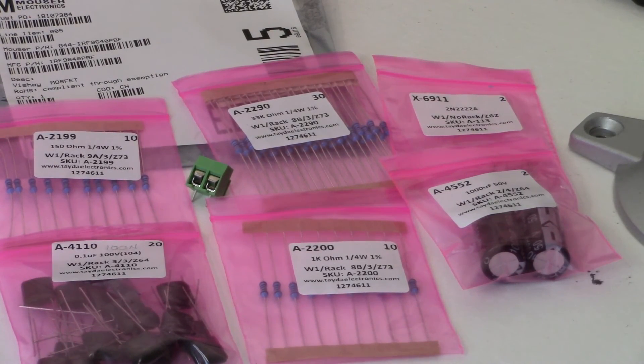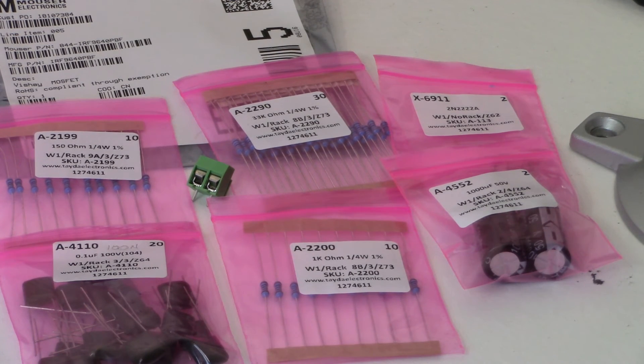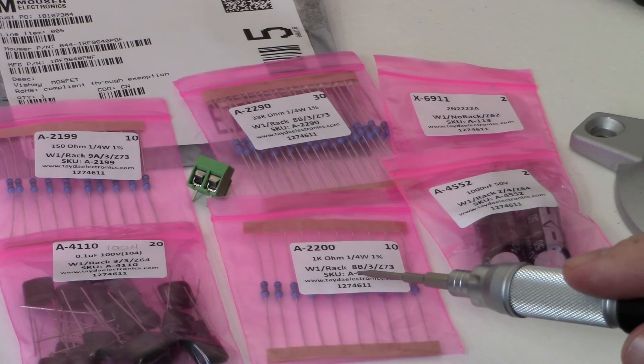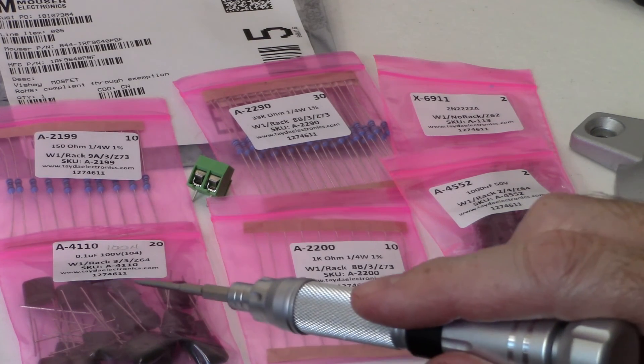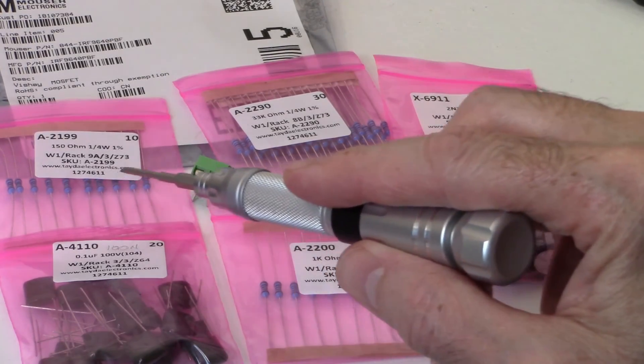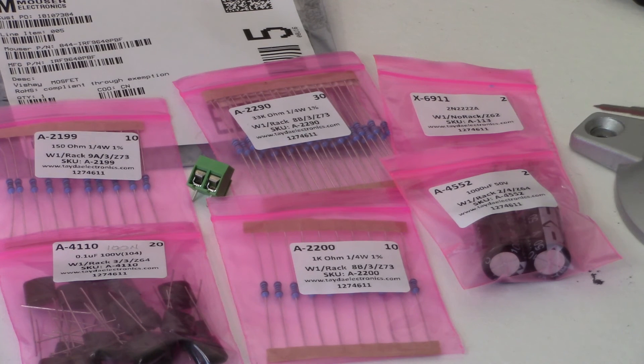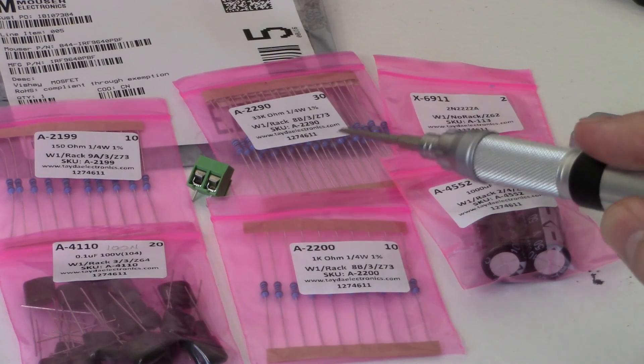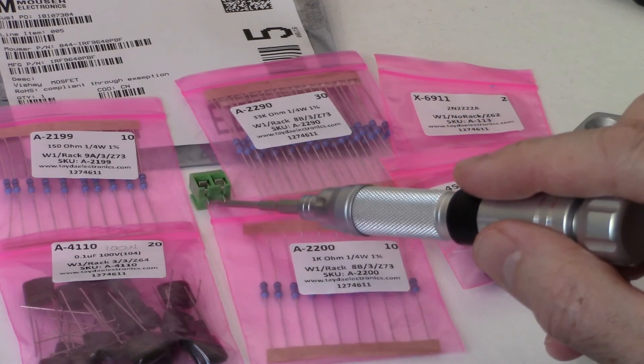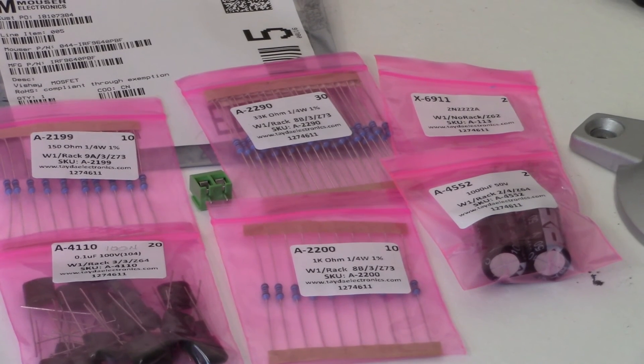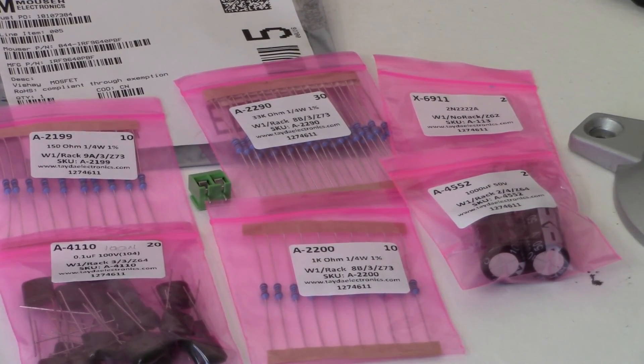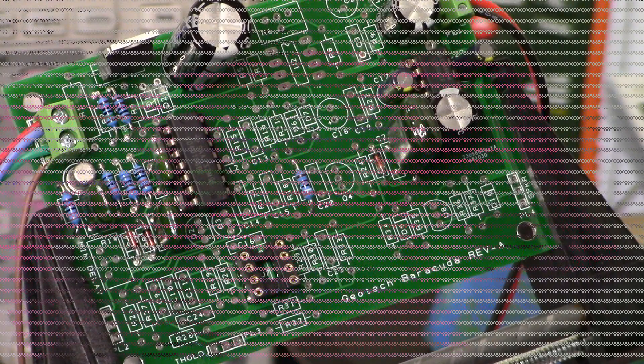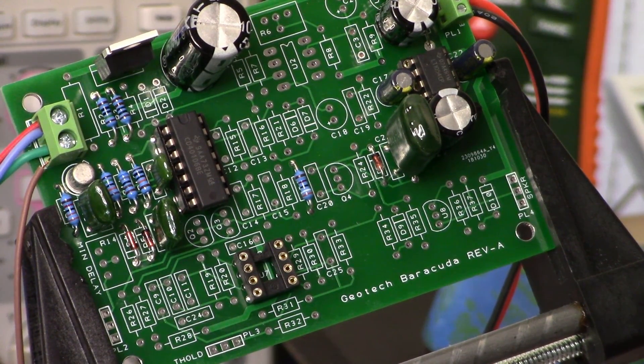Okay guys, step four of the Barracuda pulse induction DIY kit. All the components here: got a thousand microfarad capacitor, 1k ohm resistor, 100 nanofarad capacitor, 150 ohm resistor, 33k resistor, 2N2222 transistor, and we've got our IRF9640 MOSFET and my little connector here for the coil. I'm going to go and test these all out and populate the board and we'll be back.